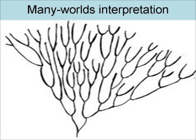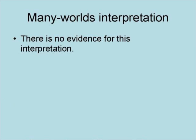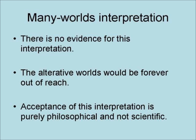The many worlds interpretation was proposed by Hugh Everett III in 1957. This view sees the world as constantly splitting off into multiple universes in which every possible quantum event actually occurs. This fits perfectly with evolution since even the most improbable events occur in some of these universes. In the case of Schrödinger's cat, the universe keeps splitting off into each alternative — in one the cat lives, and in the other the cat dies. They both happen in different quantum universes. There is, however, no evidence for this interpretation, because the alternative worlds would be forever out of reach. While quantum interference between adjacent worlds has been suggested, the possible evidence from single particle interference is not unique to the many worlds interpretation. As a result, acceptance of this interpretation is purely philosophical and not scientific because it cannot be tested.